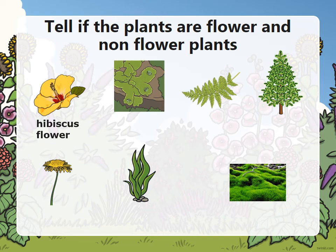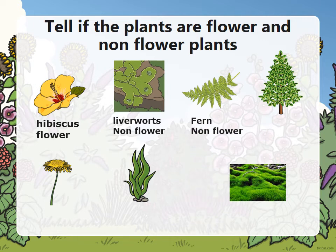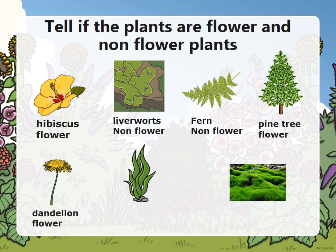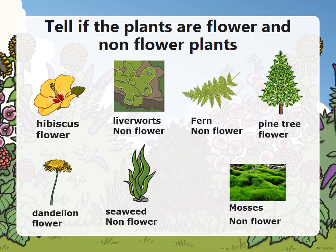That's a hibiscus — that's a flower plant. That's a liverwort and that's a non-flower plant. That's a fern, which is a non-flower plant. That's a pine tree, which is a non-flower plant. That's a dandelion, which is a non-flower plant. That is a seaweed, which is a non-flower plant. And that is mosses, which is a non-flower plant.